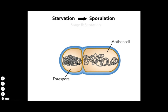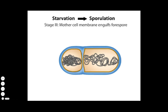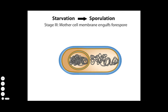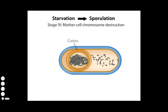In stage 3 of sporulation, the mother cell membrane engulfs the fore-spore, resulting in a structure encircled by two membranes. In stage 4, the mother cell chromosome is destroyed, and a cortex, made up of a thick peptidoglycan layer, is placed between the two membranes surrounding the fore-spore protoplast. This cortex will be important in providing heat resistance and maintaining dormancy to the spore.